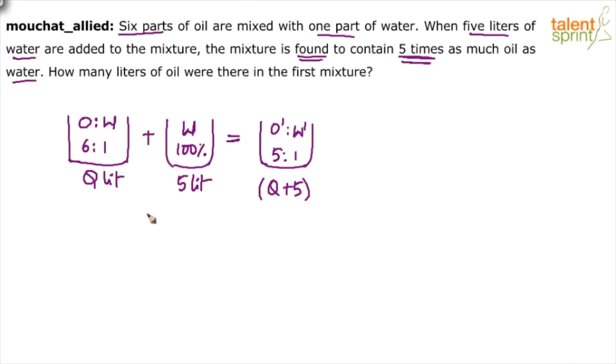The quantity of oil on the left-hand side should be equal to quantity of oil on the right-hand side, or quantity of water on the left-hand side should be equal to quantity of water on the right-hand side. Based on that, you will be able to find out Q, which is the required answer. So initial oil quantity